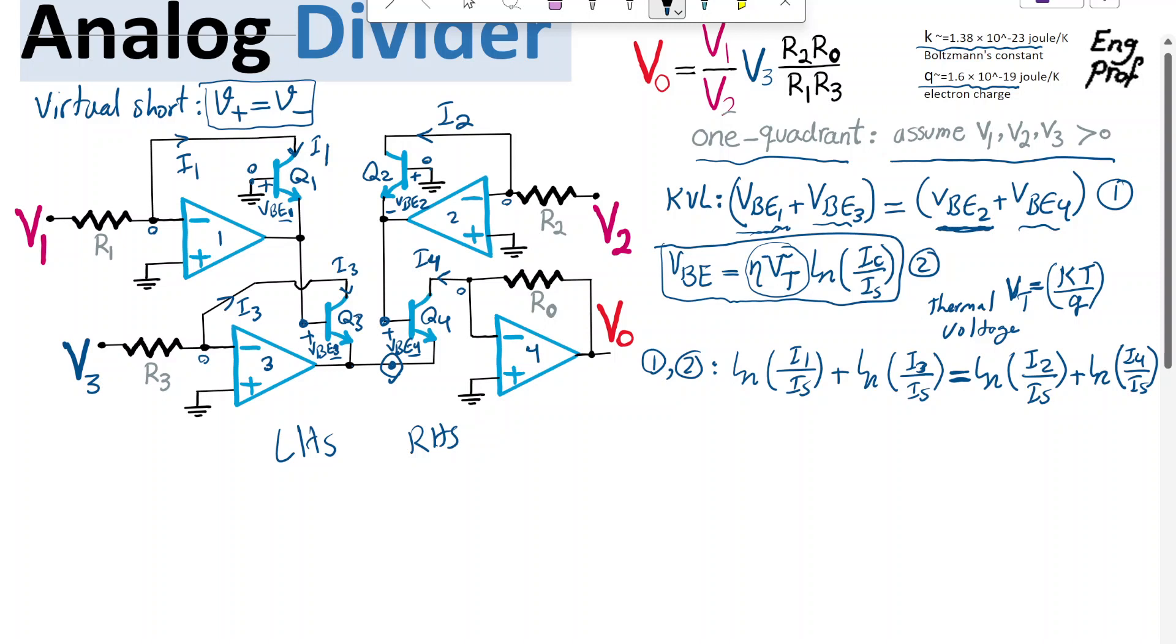So as a result, the next step would be, we can just simplify knowing the natural logarithm properties, so we can just do I1, I3 divided by IS squared. Again, we make the assumption that all the transistors are similar,